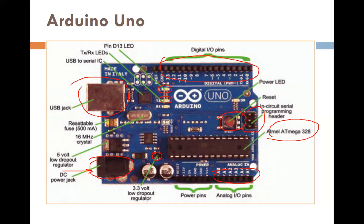There are two LEDs also available for transmit and receive. Whenever you make a program for serial communication, the transmitter LED as well as receiver LED blink simultaneously. The ATmega328 is an 8-bit microcontroller performing 8-bit operations at a time. The USB to serial IC converts data coming from the computer in USB format into TTL logic which the microcontroller understands — this IC converts USB to serial and serial to USB.